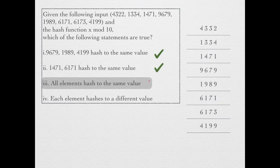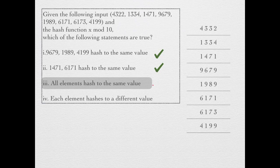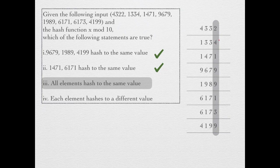Statement three: all elements hash to the same value. For the statement to be true, all the numbers must have the same last digit. But as we can see, all numbers don't have the same last digit, hence they don't hash to the same value. Therefore the statement is false.